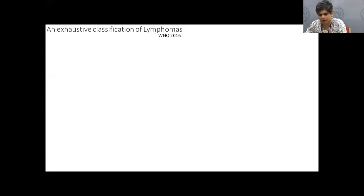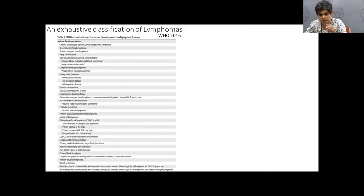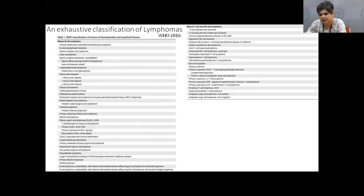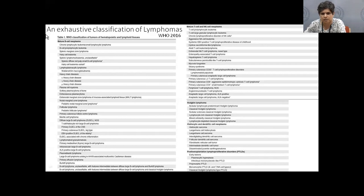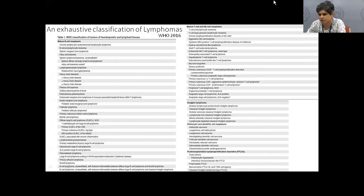This slide illustrates the scope of variety and heterogeneity in lymphomas — it's not a single disease. The list includes B-cell lymphomas, T-cell lymphomas, Hodgkin lymphomas, and rarer post-transplant lymphoproliferative disorders. They have been classified very minutely based on clinical presentation, histopathology, genetic features, and treatment approach.